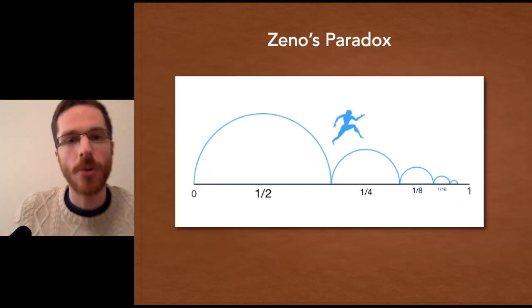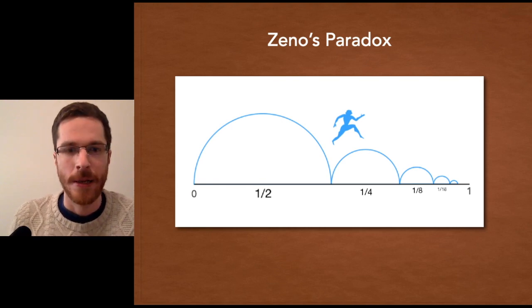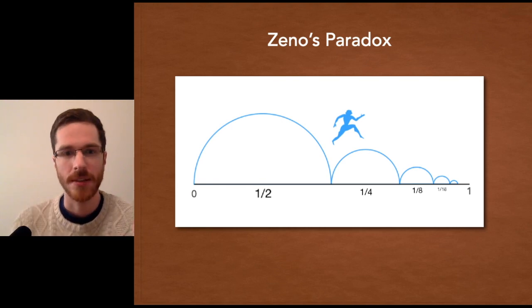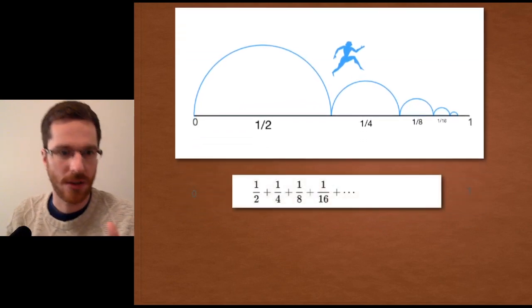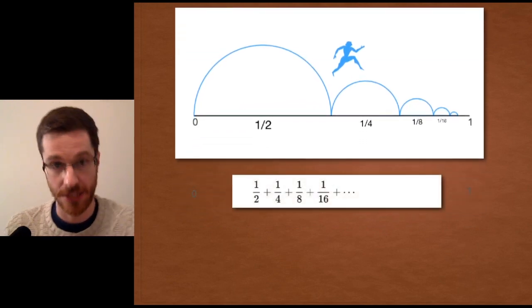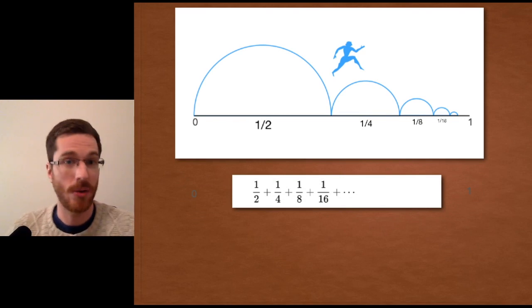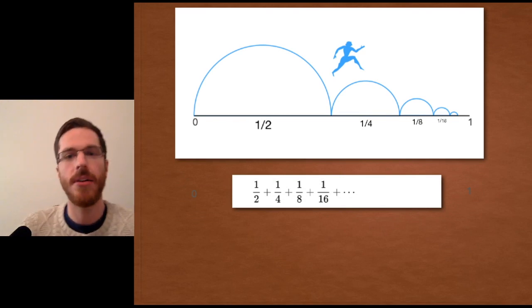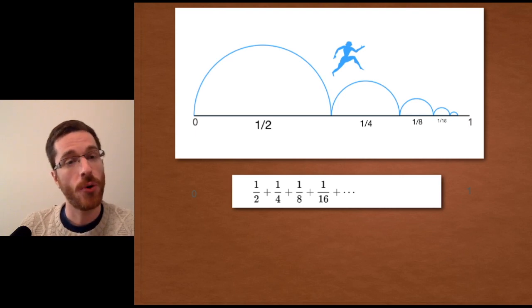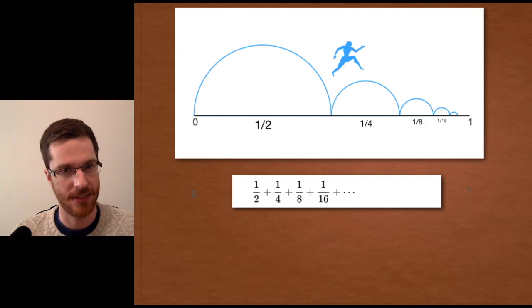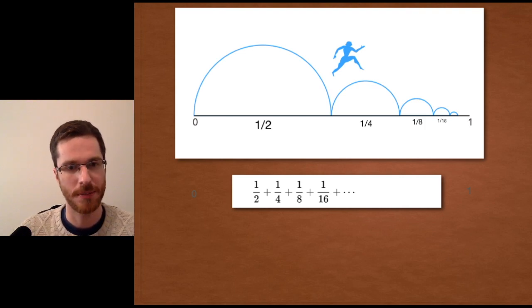So let's port this back to Zeno's paradox. So with Zeno, you see the graph here. Let's consider the point on the far left of the line zero and then the point on the far right of the line one. So that's the totality of the distance that has to be covered. So our runner, before going from zero to one, he has to cover half of that distance in Zeno's paradox.